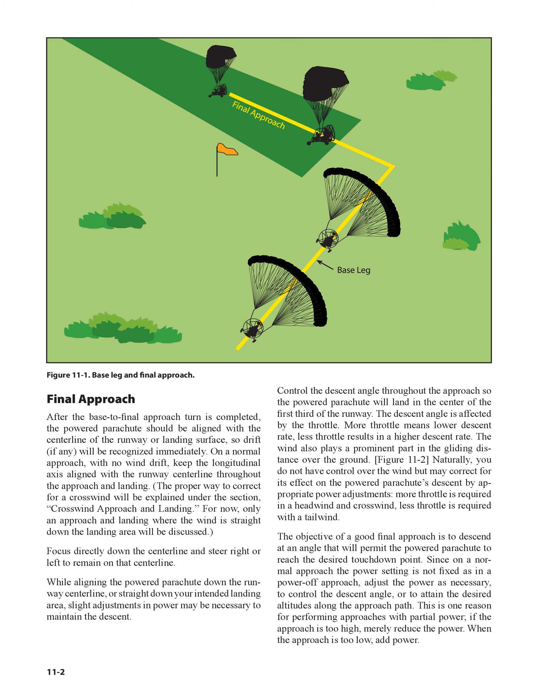The wind also plays a prominent part in the gliding distance over the ground (Figure 11-2). You do not have control over the wind, but may correct for its effect by appropriate power adjustments — more throttle is required in a headwind and crosswind, less throttle is required with a tailwind. The objective of a good final approach is to descend at an angle that will permit the powered parachute to reach the desired touchdown point. Since on a normal approach the power setting is not fixed, adjust power as necessary to control the descent angle. If the approach is too high, reduce power; when too low, add power.